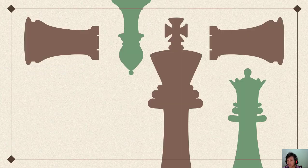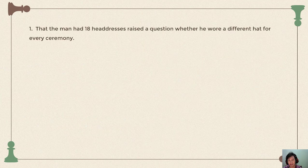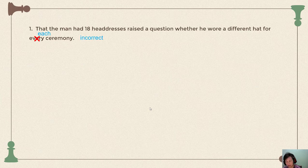Now let's do some exercises. State whether each sentence is correct or incorrect. First: 'That the man had 18 headdresses raised a question whether he wore a different headdress for every ceremony.' This is incorrect. 'Every' refers to the group as a whole, but here we want to emphasize each individual ceremony, so it should be 'each ceremony.'